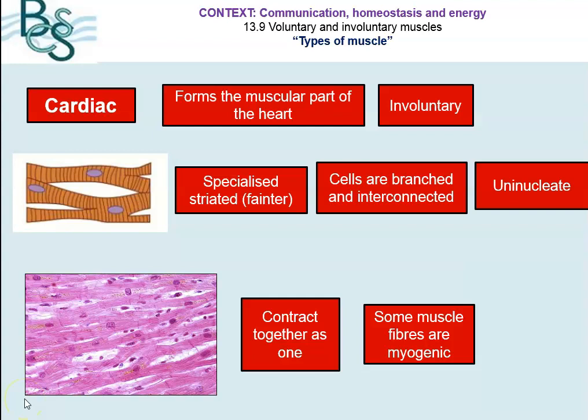The bottom picture there — the histology, so that's a microscope slide — you can see the faint striations. To recognise that this is cardiac muscle, you've got white spaces in between the muscle fibres. These muscle fibres all contract together as one, so that the heart beats as one. And some of the muscle fibres are referred to as myogenic, which means that they twitch.